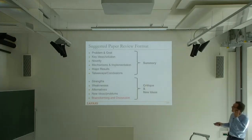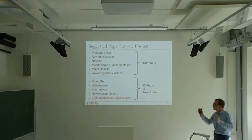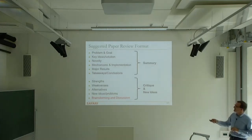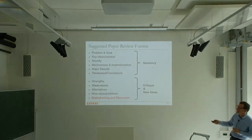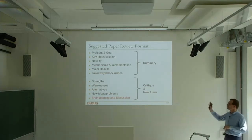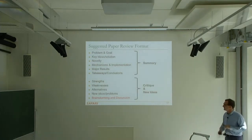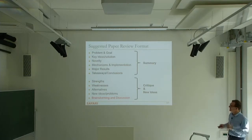So this is the suggested paper review format: a summary covering problem and goal, key ideas and solution, novelty, mechanisms and implementation, major results, takeaways, and conclusions. Then the critique part: strengths, weaknesses, alternatives, new ideas, and brainstorming. Of course, it's a loose format. I have some example reviews on my course websites. Maybe I'll email you if Abdullah reminds me — or you can remind me if I don't send them.